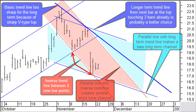You now also have a first estimate as to where price can go and within which period. Here this means the down-moving red triangle with a target price between $17 and $16 in a period of maximum about 15 days.